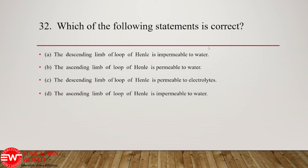Question number 32: regarding the loop of Henle — the descending limb of the loop of Henle is impermeable to water is incorrect. The ascending limb of the loop of Henle is impermeable to water — we know that the ascending limb of the loop of Henle does not allow water to enter into it.